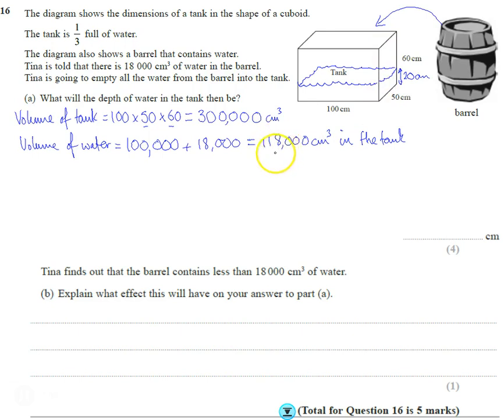So what we're going to do is work out the area of the base. The area is going to be 100 centimeters times 50 centimeters which is going to be 5,000 centimeters squared. To work out the volume of water, it's going to be 5,000 times something.